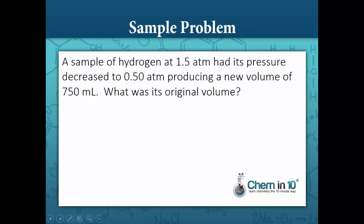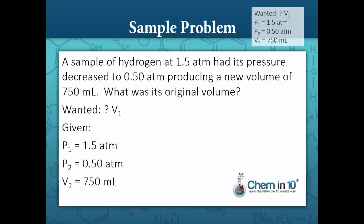Let's look at a sample problem. A sample of hydrogen at 1.5 atm had its pressure decreased to 0.50 atm producing a new volume of 750 milliliters. What was its original volume? So we want to know the original volume, that's going to be V1. We are given 1.5 atm, that is its original pressure. And 0.50 atm is its new pressure producing a new volume, so V2 is 750 milliliters.